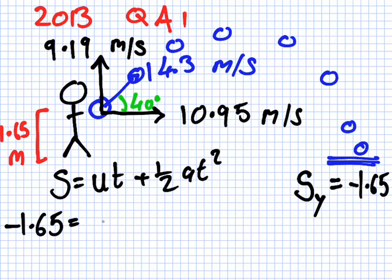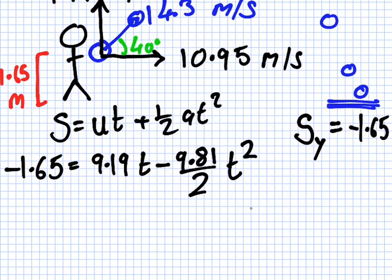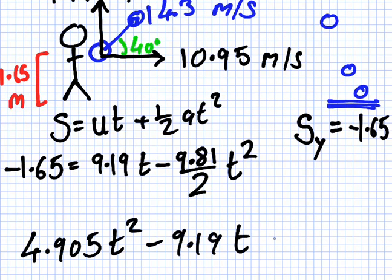Now, which velocity do I use? The 9.19, isn't it? And then the acceleration is minus 9.81 over 2 multiplied T squared. So we get, if I clean this up, I'll get 4.905 T squared minus 9.19 T minus 1.65 equals 0. What type of equation is that? Just a quadratic.